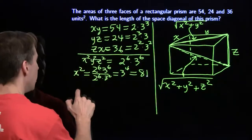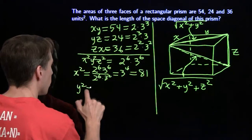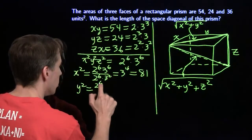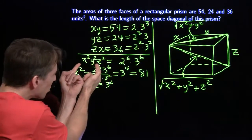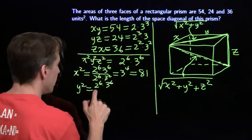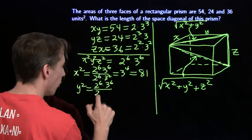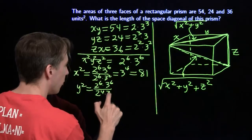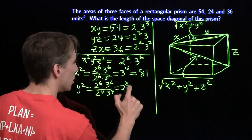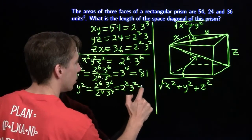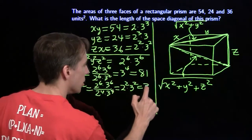Now I can do the same thing with y squared. So y squared is going to be 2 to the sixth times 3 to the sixth. I'm going to divide out the square of xz. I square this, I have 2 to the fourth, 3 to the fourth. It's going to leave me 2 squared times 3 squared. Of course, that's 6 squared, which is 36.